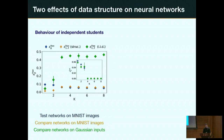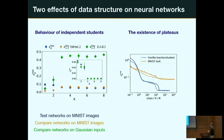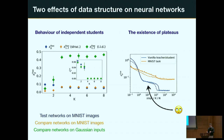The other difference shows up in the dynamics: the existence of plateaus. Plotting test error as a function of training time, networks trained on MNIST show an exponential decay before settling at some error value. But networks trained in the teacher-student setup show extended periods where the error stays roughly constant, followed by a sudden specialization transition — like a phase transition — where the network picks up structure in the task. You only see this in the synthetic setup with constant hyperparameters.